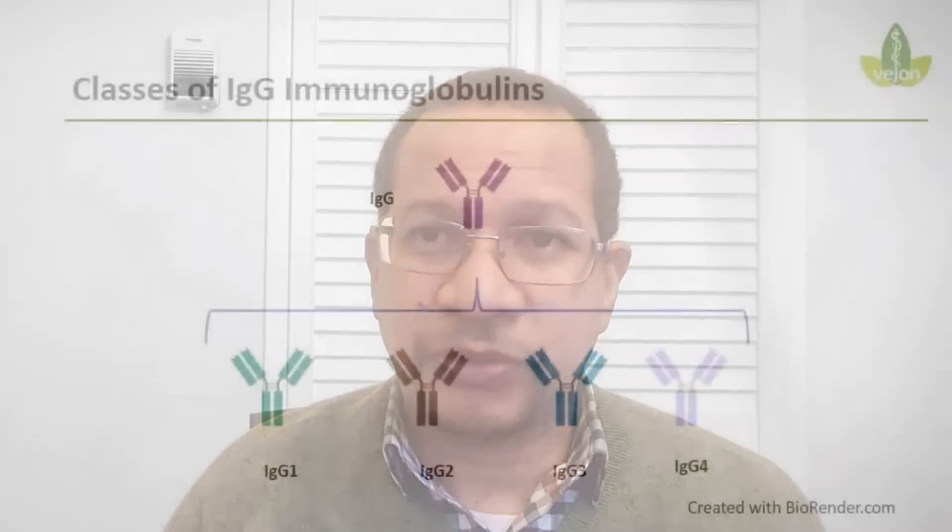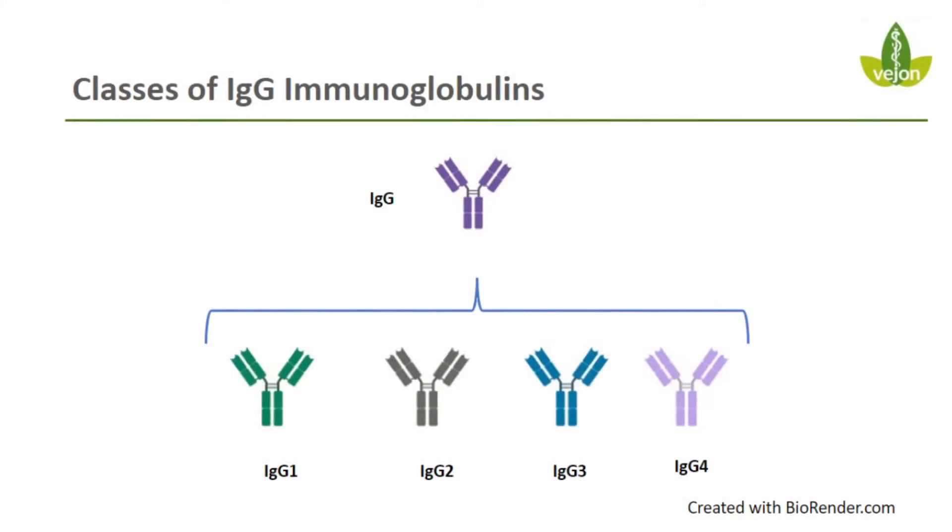Within IgG, this is the long-lived antibody — the antibody that you tend to get after you've had an infection or even a vaccination. The second time that you're exposed to the virus or the bacteria, your body will then make IgG antibodies. This is put into four groups or four classes: IgG1, IgG2, IgG3, and IgG4.